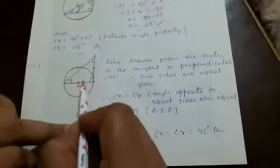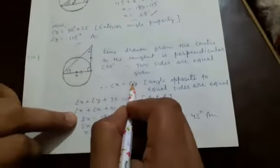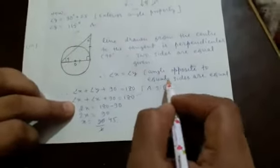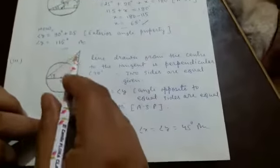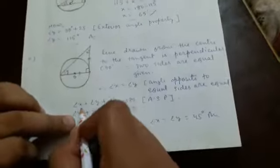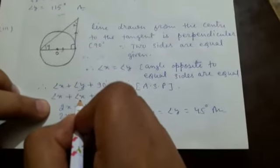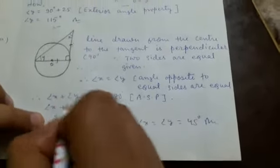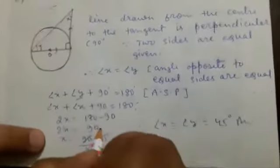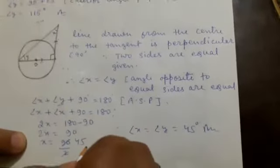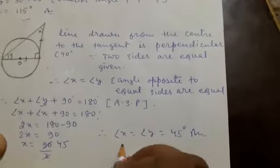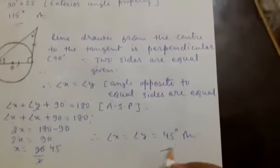Since these two sides are equal, angle x equals angle y, because angles opposite to equal sides are equal. So substituting y with x: 2x plus 90 equals 180. Transposing, 2x equals 90, therefore x equals 45 degrees. So angle x equals angle y equals 45 degrees.